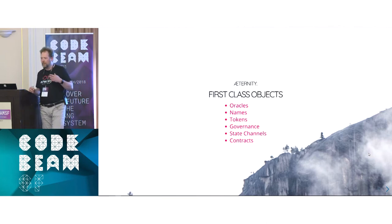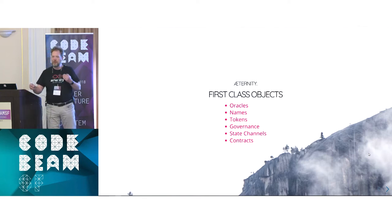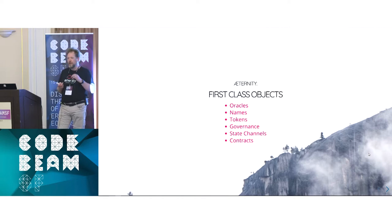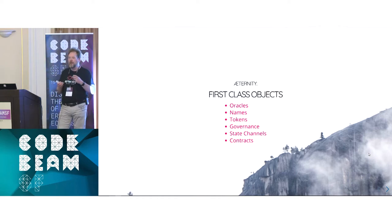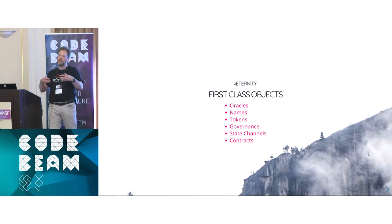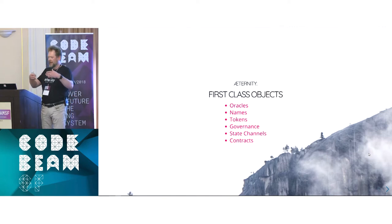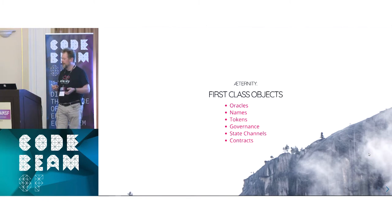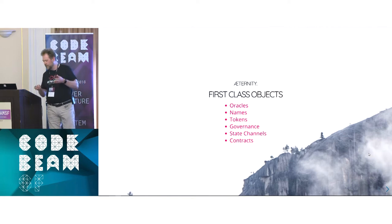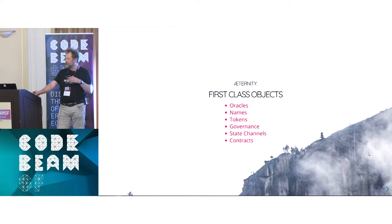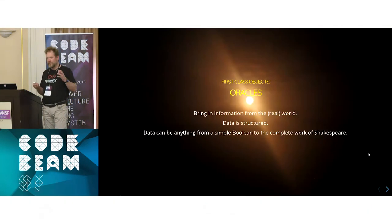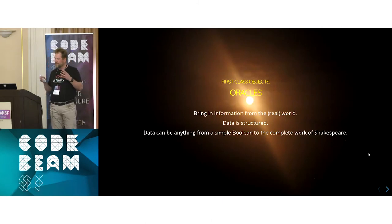So why do we have Eternity and what do we want to do that is new with this blockchain? The main point from a slightly technical point of view is that we are providing a number of things that when Ethereum came out and people started writing smart contracts, they started to implement several times: oracles, names, tokens, governance, state channels, and contracts. What Eternity will provide is to actually have these types of objects as first-class objects on the chain.